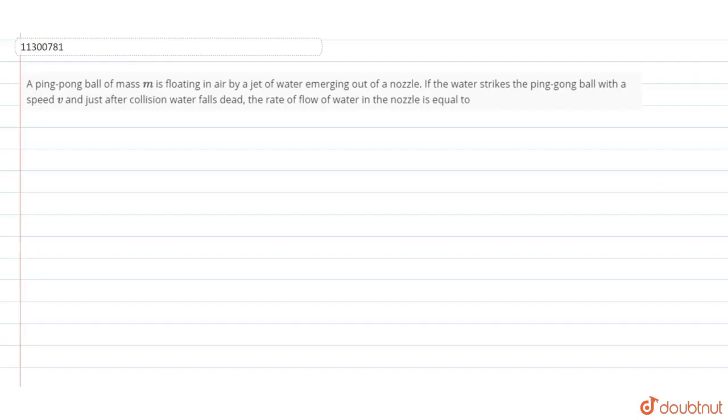So, a ping pong ball of mass m is floating in air by a jet of water emerging out of a nozzle. I keep a water jet that emerges from the nozzle, and the ping pong ball has a speed.